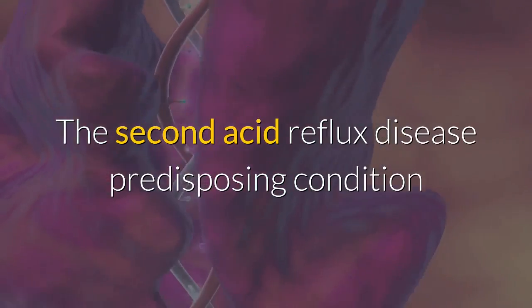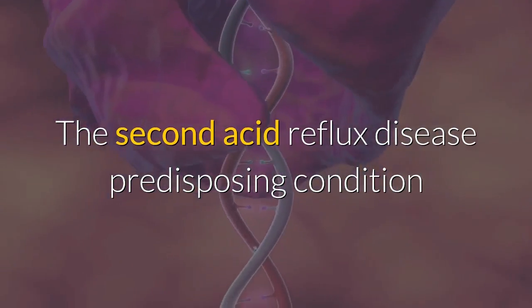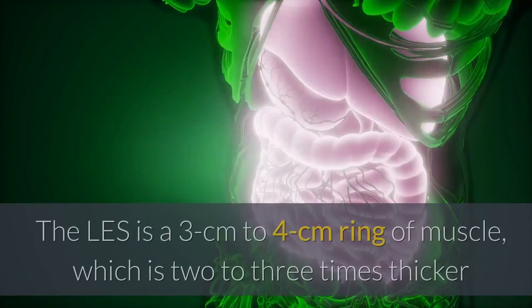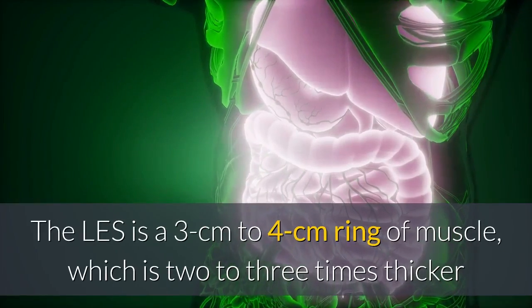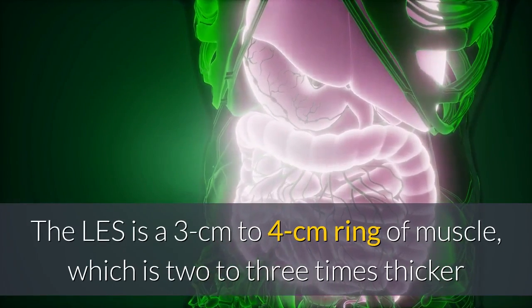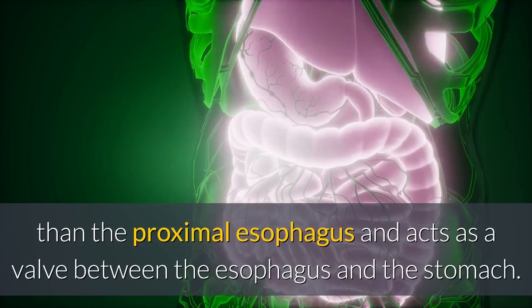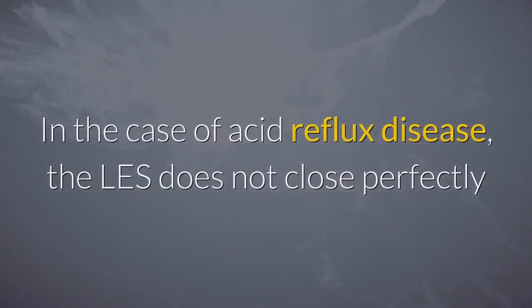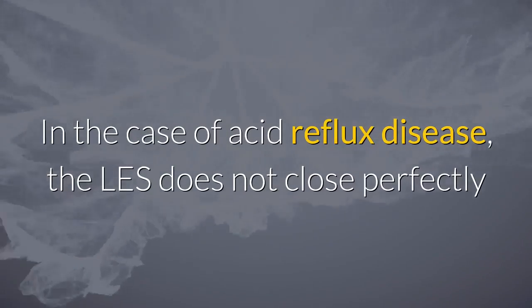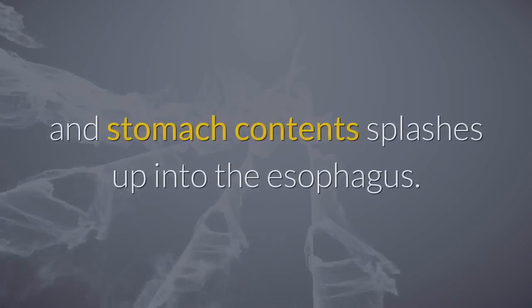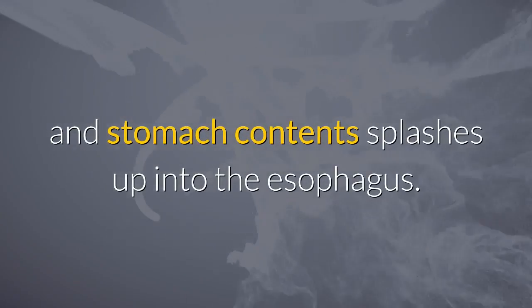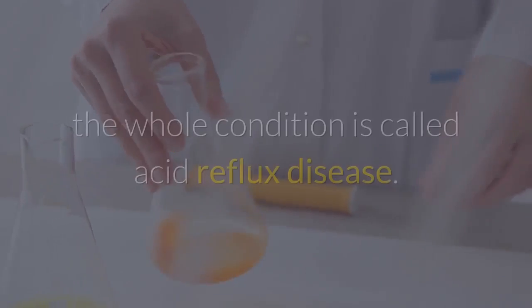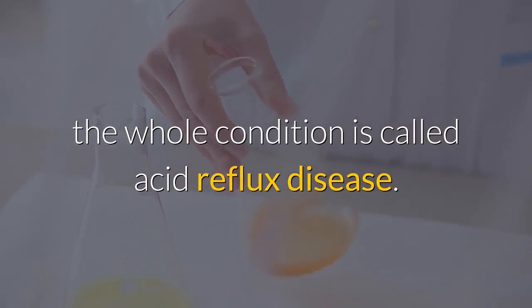The second acid reflux disease predisposing condition is a lower esophageal sphincter, or LES. The LES is a 3 cm to 4 cm ring of muscle, which is 2 to 3 times thicker than the proximal esophagus and acts as a valve between the esophagus and the stomach. In the case of acid reflux disease, the LES does not close perfectly and stomach contents splash up into the esophagus. When pathologic symptoms follow this process, the whole condition is called acid reflux disease.